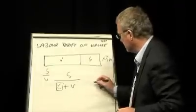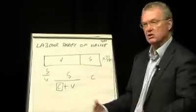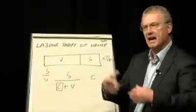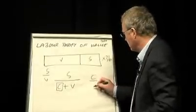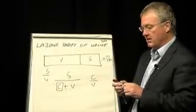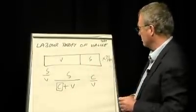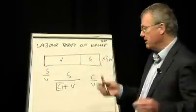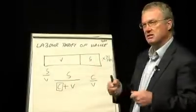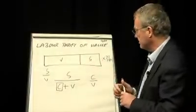So, over time, through this process of accumulation, which is not an option for a capitalist, he has to do this. This ratio, C over V, which he calls the organic composition of capital, not a particularly helpful term, but that ratio increases over time. Now, here's the trick.